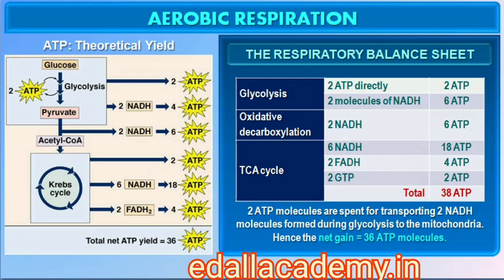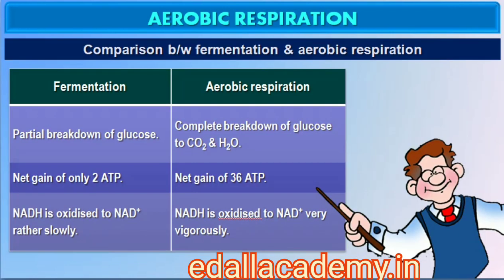Yet it is useful to do this exercise to appreciate the beauty and efficiency of the living system in extracting and storing energy. Hence, there can be a net gain of 36 ATP molecules during aerobic respiration of one molecule of glucose. Fermentation accounts for only a partial breakdown of glucose, whereas in aerobic respiration it is completely degraded to CO2 and H2O. In fermentation there is a net gain of only two molecules of ATP, whereas many more molecules of ATP are generated under aerobic conditions. NADH is oxidized to NAD+ rather slowly in fermentation, however the reaction is very vigorous in aerobic respiration.